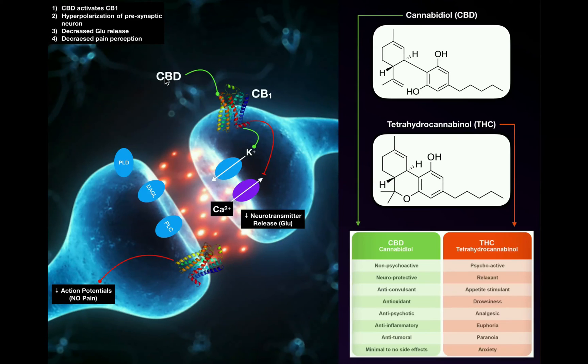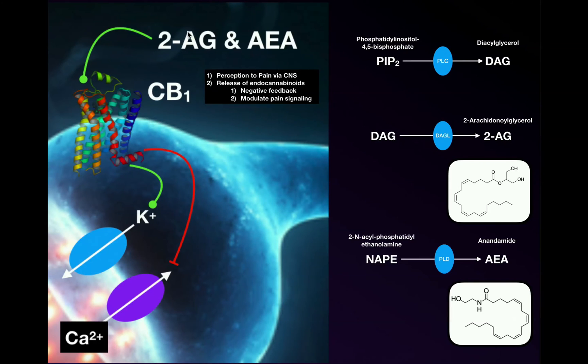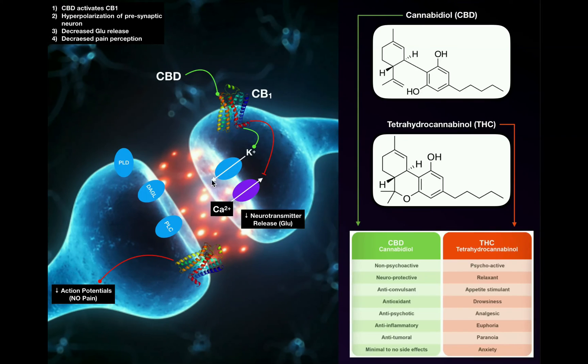CBD will bind to the CB1 receptor, and that's going to do the same thing that 2-AG and anandamide did. They trigger the activation of the potassium channel, but they inhibit the influx of calcium. They're going to stimulate efflux of potassium, which would tend to cause hyperpolarization, and inhibit the influx of calcium, which inhibits depolarization. Combined, the net effect is you have hyperpolarization of this membrane, which leads to diminished glutamate release by this presynaptic neuron.